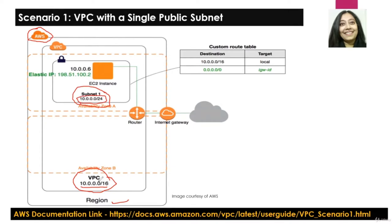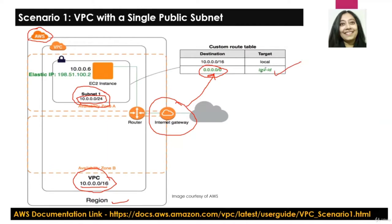After we have created the VPC and the subnet, since this is a public subnet, we need to ensure that we associate or attach an internet gateway. After the internet gateway is attached, we need to modify our route table to ensure that all non-local traffic — denoted by 0.0.0.0/0 — is directed to our internet gateway, with the target being the IGW ID.